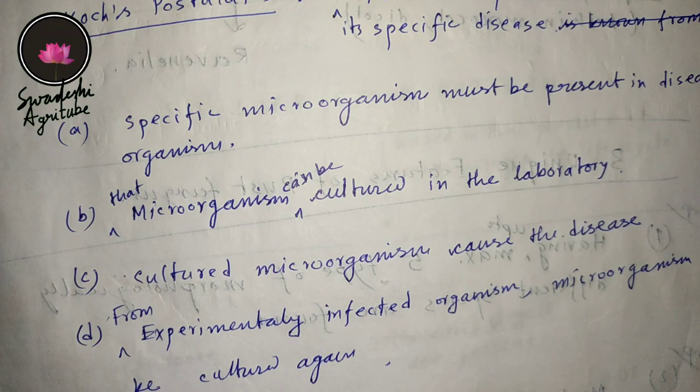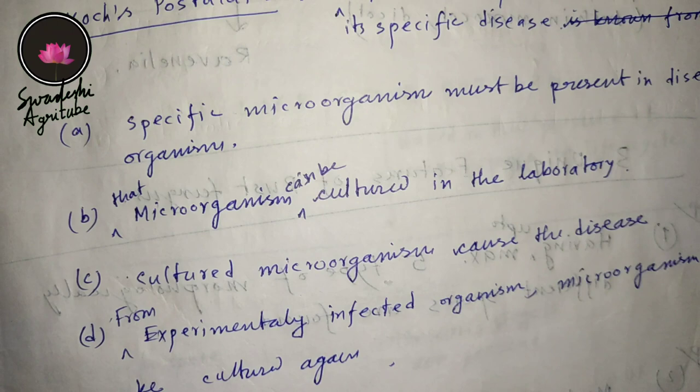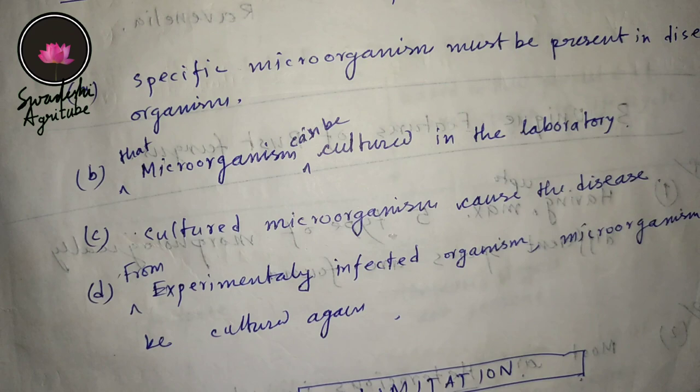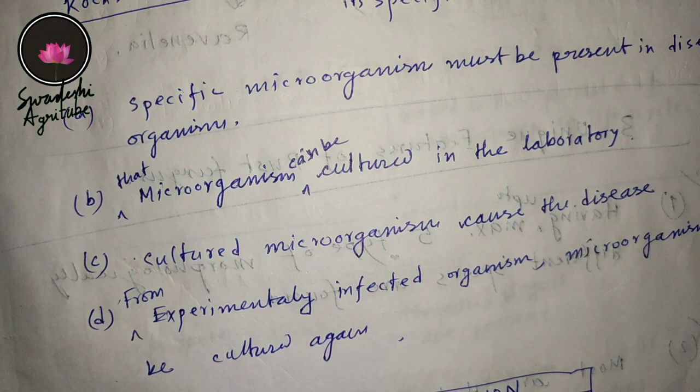For the third postulate, take some of those cultured microorganisms — the causal organism, the pathogen — and put them into a healthy person. If they cause the disease, that means they are satisfying the third postulate of Koch's postulates.